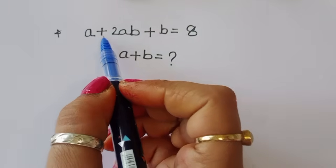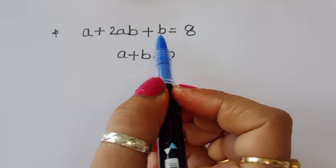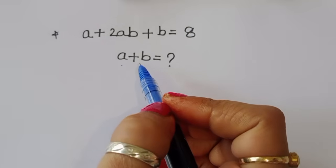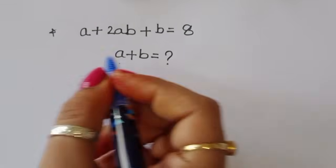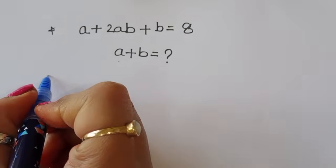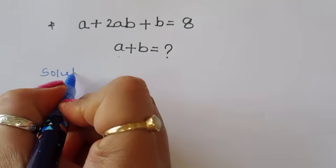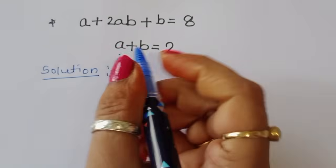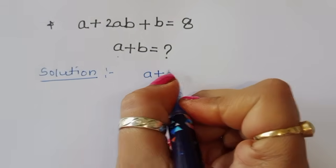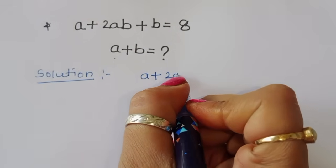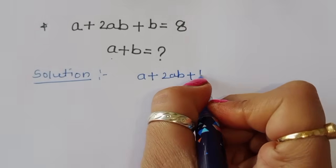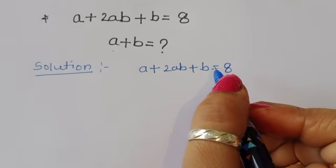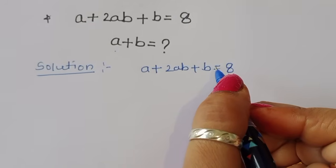The question is: given a + 2ab + b = 8, we have to find out the value of a + b. Let's see the solution. a + 2ab + b = 8 is the given question.